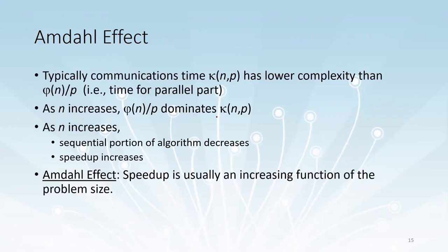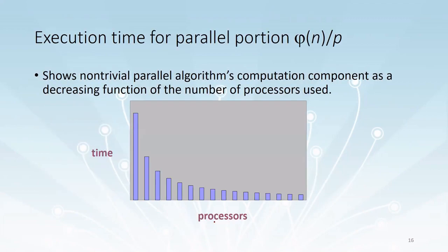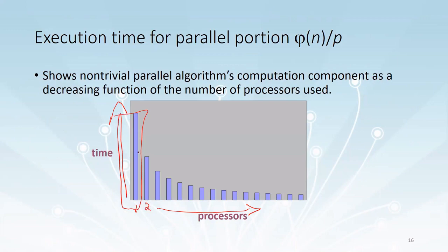Amdahl's effect states that speedup is usually an increasing function of the problem size n. As n increases, the time taken for executing the sequential or parallel parts increases. A plot shows that as the number of processes increases, the time required for execution decreases — when only one processor is used, execution time is at its maximum. When the number of processes doubles, time is roughly halved, but even with significantly more processes, there is no drastic further change, and the time eventually stabilizes at a constant.